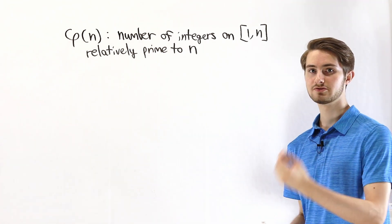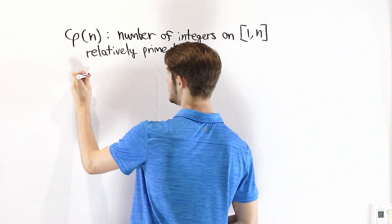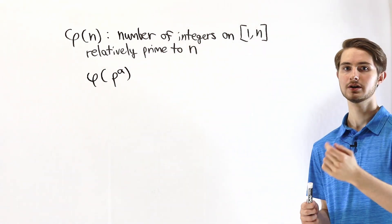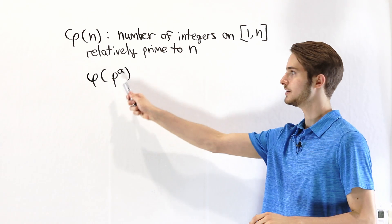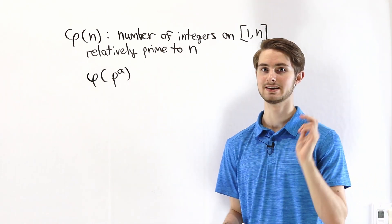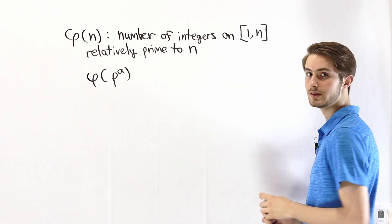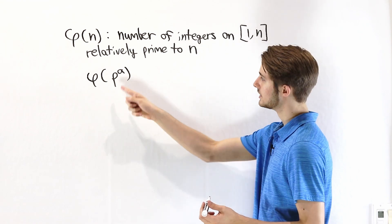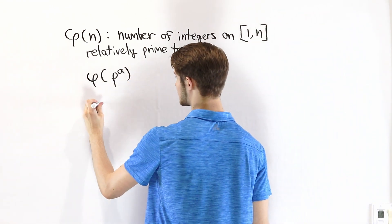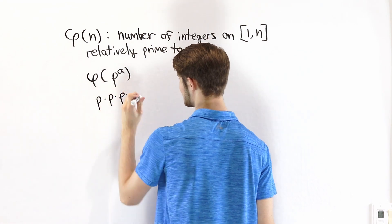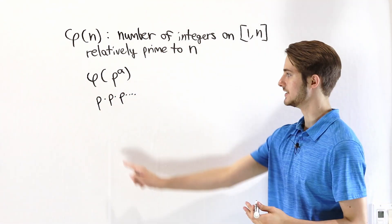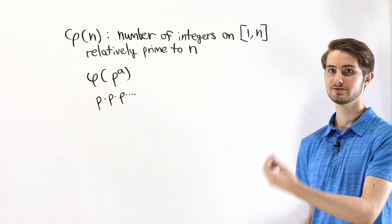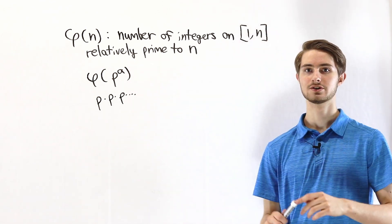Now we've seen the simple example of φ of a prime number. We're going to look at a slightly more general result: the totient function of P to the power of some number A, where P is still a prime number and A is some positive integer exponent. In order to figure out what this is, we first need to look at the prime factorization. Because P is prime, the prime factorization of P to the A is going to be P times P times P and so on, so the only prime factor is P.